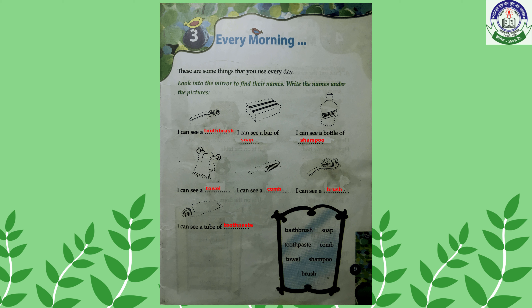I can see a bar of soap. The next picture is a shampoo, so here you have to write shampoo. I can see a bottle of shampoo. The next picture is a towel, so here write towel. I can see a towel.